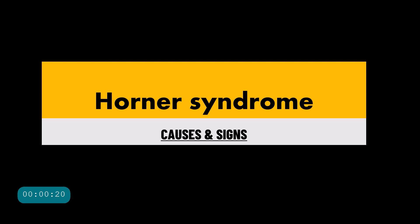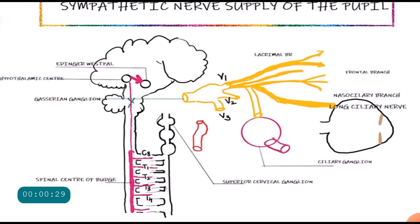Welcome to another lecture from ophthalmology. This is Dr. Amrit. Today we are studying the Horner syndrome — what causes it and what are its signs. In my previous video on pupillary light reflexes and the sympathetic and parasympathetic nerve supply of the pupil, I explained in detail the pathway of sympathetic nerve supply to the eye.